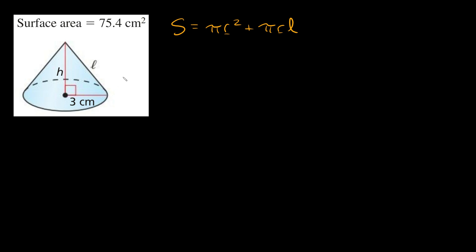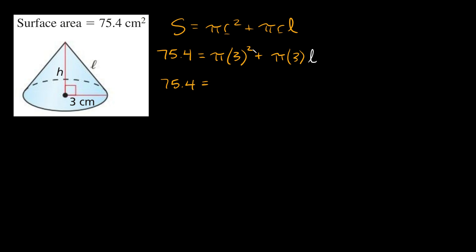Let's plug in what we know. The surface area is 75.4, so we plug that in for SA. That equals π times the radius squared — the radius is 3, so we get 3 squared — plus π times the radius, which is 3, times l. Simplifying: 75.4 equals 9π plus 3πl.